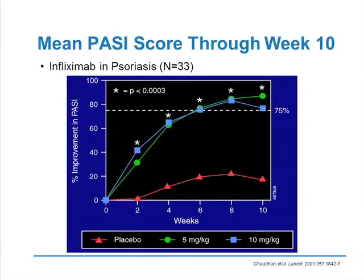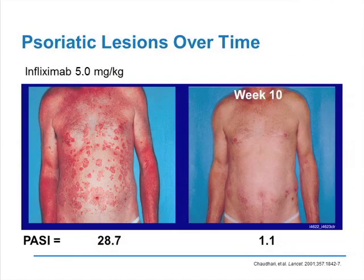Looking at the PASI score when you treat patients with infliximab, given by intravenous infusion: as early as week six, the improvement in PASI score on average is 75%, and by the end of 10 weeks at the high dose of 10 milligrams per kilogram, over 80% of patients have achieved PASI 75. At the low dose, over 75% have achieved PASI 75 — a dramatically effective treatment, as shown in the before-and-after photograph.